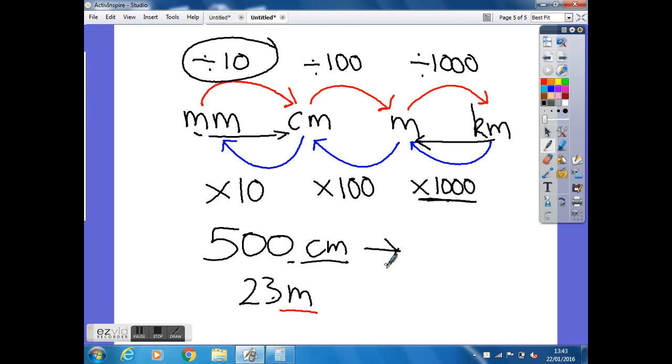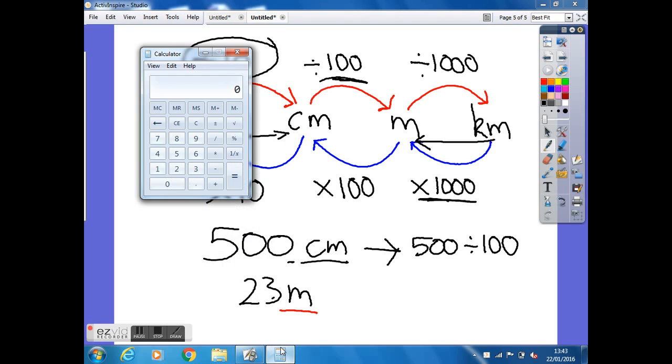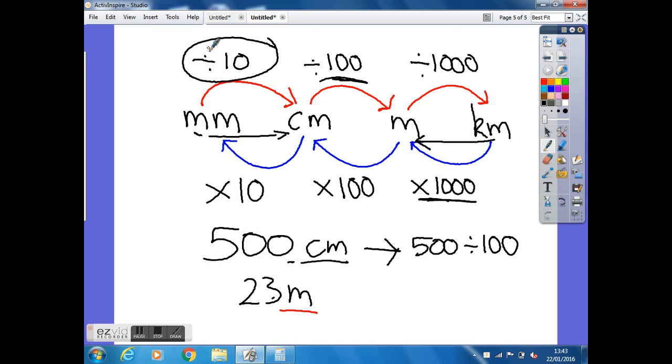Now, if we go back to our diagram, we need to find the section that tells us how to convert centimeters to meters. So that is actually this one, and that's divided by 100. So we're just going to do 500 centimeters divided by 100. And that should give us our answer in meters. So I'll bring up the calculator to do this. So 500 divided by 100, that gives you an answer of 5.